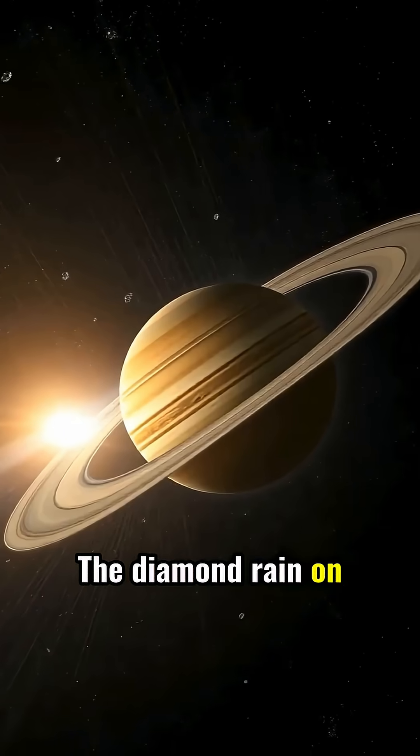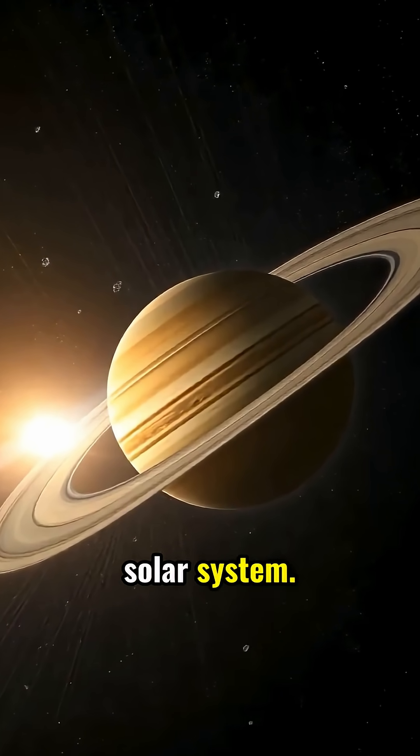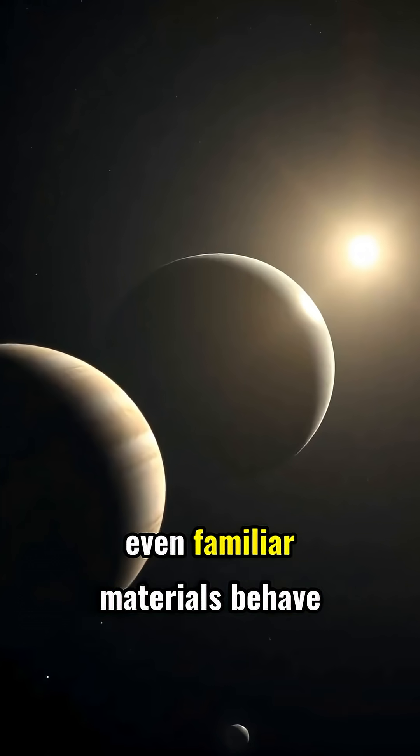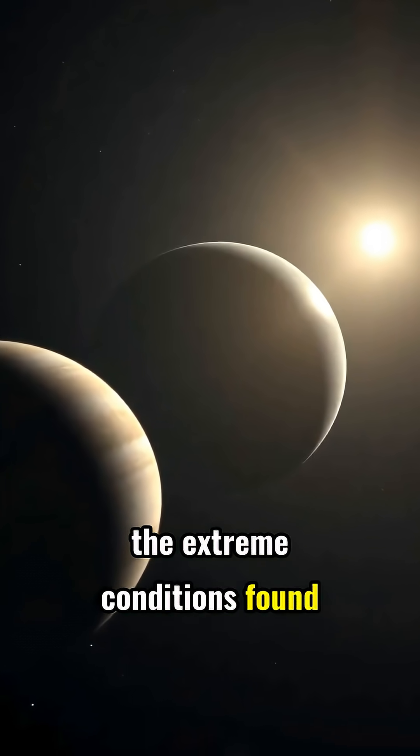The diamond rain on these planets represents one of the most extraordinary jewelry shows in our solar system. It's a reminder that even familiar materials behave in alien ways under the extreme conditions found elsewhere in our universe.